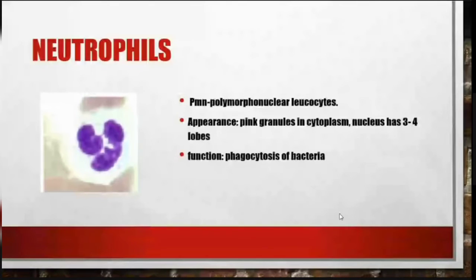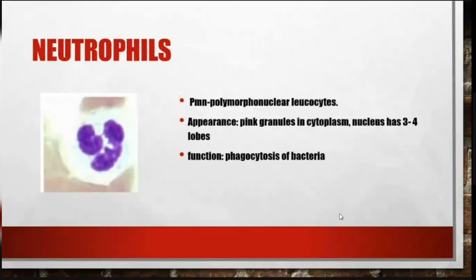Neutrophils are polymorphonuclear leukocytes. They have pink granules in the cytoplasm and the nucleus has 3 to 4 lobes. Their function is phagocytosis of bacteria.